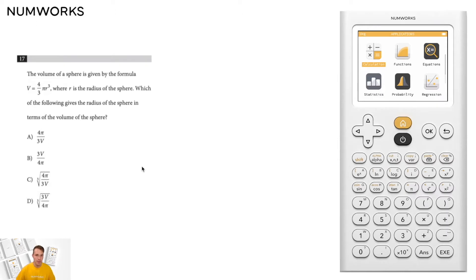the volume of a sphere is given by the formula v equals four-thirds pi r cubed, where r is the radius of the sphere. Which of the following gives the radius of the sphere in terms of the volume of the sphere?